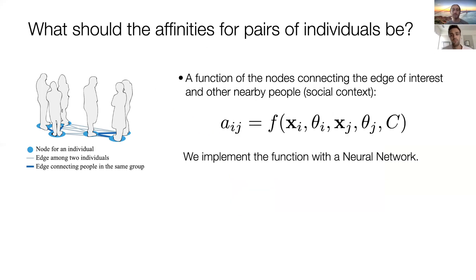However, it is impossible to accurately determine affinities between pairs of participants without also considering the social context of the rest of the scene. Therefore, our affinity function takes an additional context input C, which represents the rest of the participants in the scene. We implement this function using a neural network.